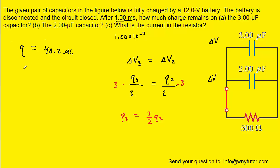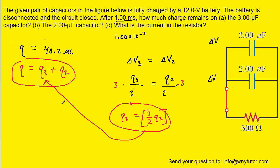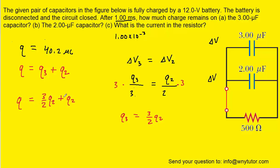The total charge of 40.2 microcoulombs is spread across both the 3 microfarad and 2 microfarad capacitors, giving us a system of two equations with two unknowns. Substituting the expression for Q3 into the total-charge equation and combining like terms gives (5/2)Q2 = 40.2 microcoulombs. Multiplying both sides by 2/5 isolates Q2, which equals approximately 16.1 microcoulombs.